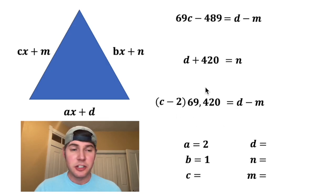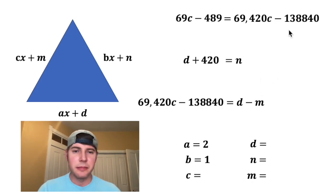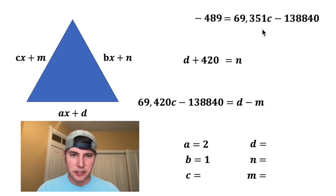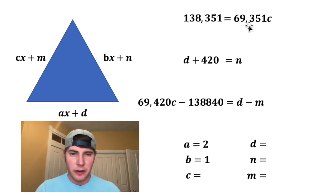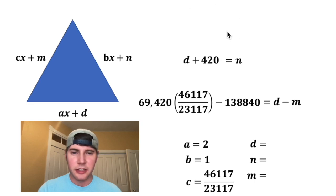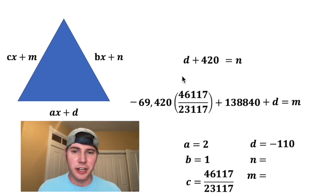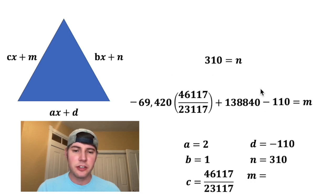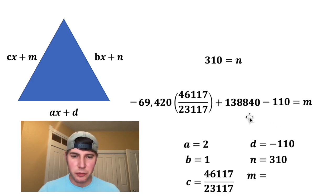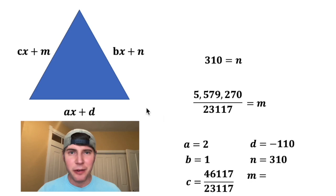I'll scoot this over, and now I have a (d minus m) here and a (d minus m) here, so I'm going to multiply both sides by (c minus 2), which brings it up here. Distribute the 69,420 to both of those. Now I have two different equations with (d minus m), so I'm going to substitute this whole thing into this (d minus m). If I subtract 69c from both sides I get this, and if I add 138,840 to both sides I get this. Then divide both sides by 69,351c, scoot the c over — both of these are divisible by 3, so I'm going to reduce it. Now I have a value for c. I'm going to plug this value in down here and also into the c right here. I don't need this anymore. Now I'm going to subtract d from both sides and divide everything by negative one. Now I have two equations and three variables, so I get to pick something for one of the variables.